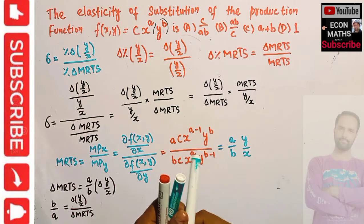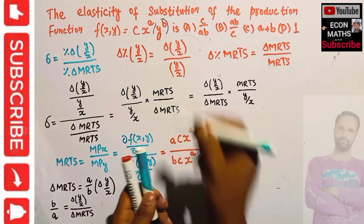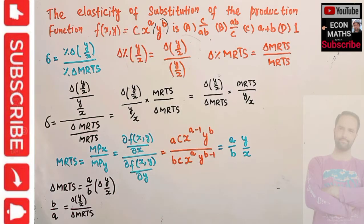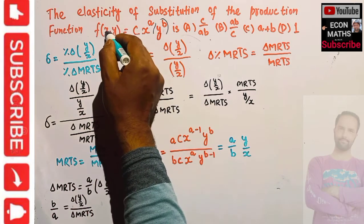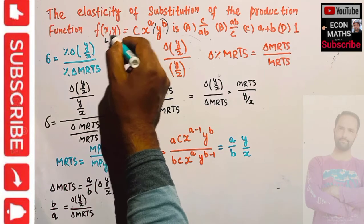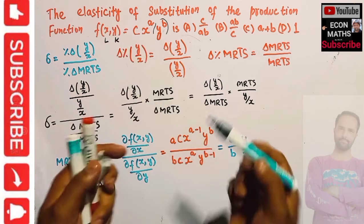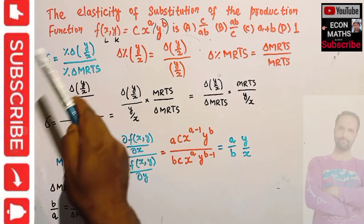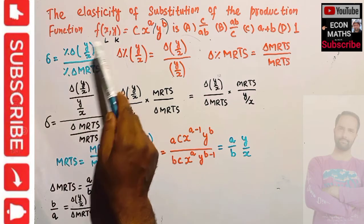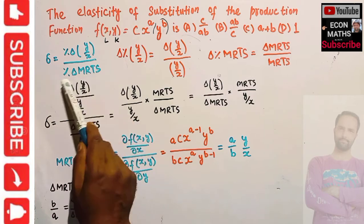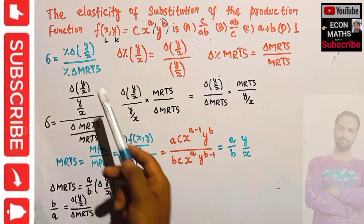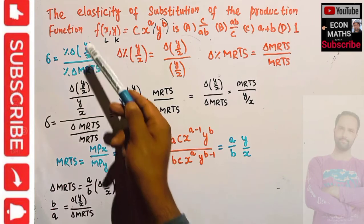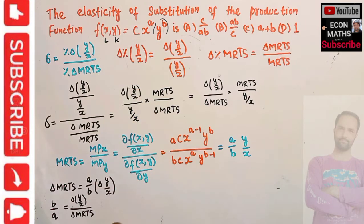The formula for elasticity of substitution — for simplicity, let's say input x is labor and y is capital, since we usually deal with capital and labor in production functions. Then elasticity of substitution is simply the percentage change in capital-labor ratio (y/x) divided by the percentage change in marginal rate of technical substitution (MRTS) between labor and capital.